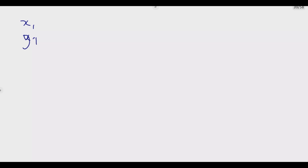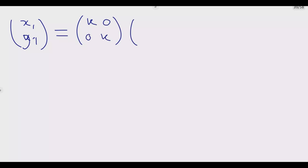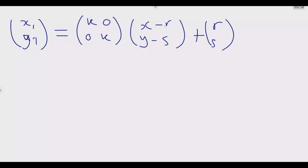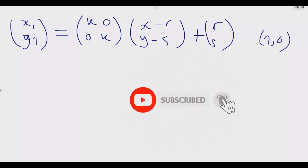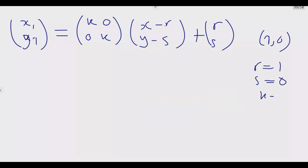The general formula is: (x1, y1) = k times the matrix [[1,0],[0,1]] multiplied by (x, y), adjusted for the center. Given the center is (1, 0), r equals 1 and s equals 0. The scale factor k equals 2. So the matrix form becomes [[2,0],[0,2]] multiplied by (x minus r, y minus s) plus (r, s), i.e., plus (1, 0). Now we can start finding the coordinates one by one.